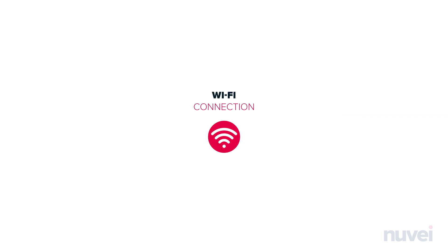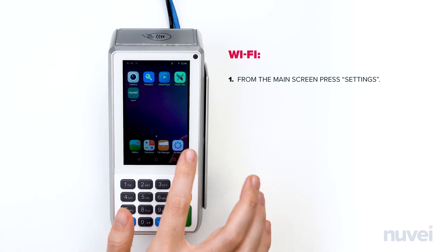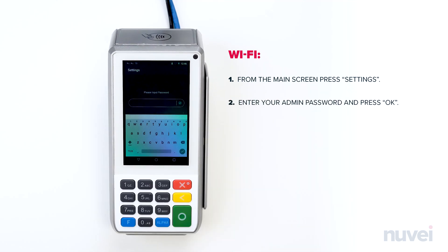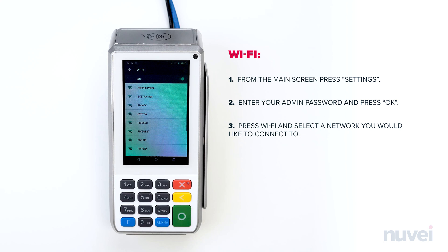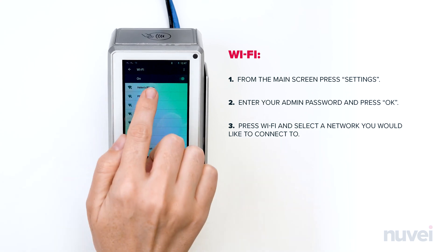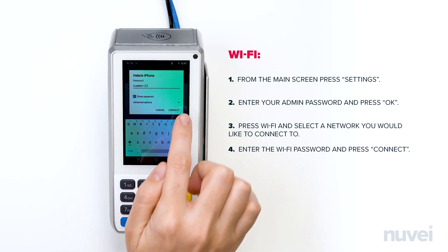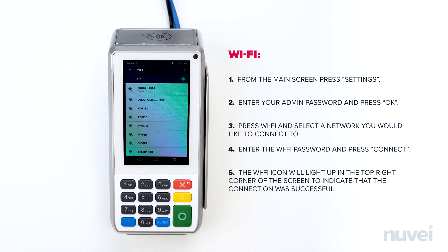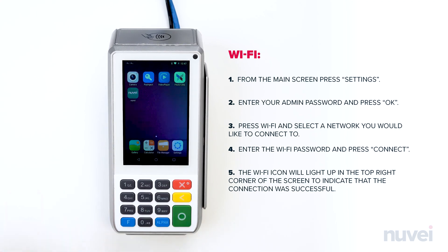Wi-Fi. If you chose to use Wi-Fi, here's how you set it up. From the main screen, press Settings. Enter your admin password and press OK. Press Wi-Fi and select the network you would like to connect to. Enter the Wi-Fi password and press Connect. The Wi-Fi icon will light up in the top right corner of the screen to indicate that the connection was successful.